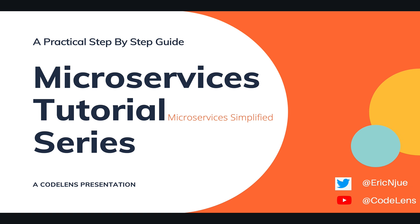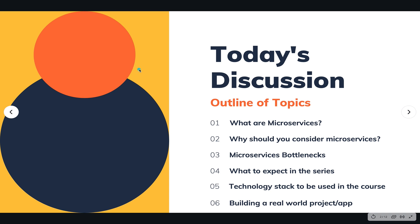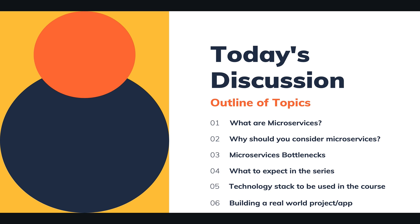Now let's get to the objective of today's episode. As you can see from my screen, this particular series is going to focus on a practical step-by-step guide on how we can create microservices. We are going to cover the definition of microservices, why you should consider using them, some of their bottlenecks, what to expect in the series, the technology stack we'll use, and finally how we can build a real-world project.